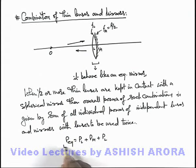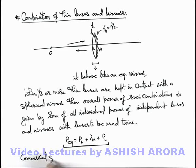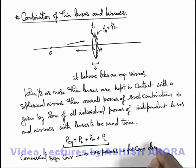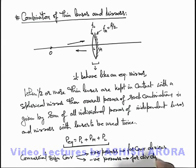These powers are used with proper signs according to the sign convention used. When we talk about the sign convention, positive powers are considered for converging devices and negative powers are used for diverging devices.